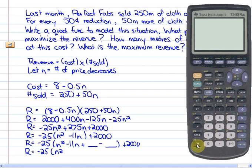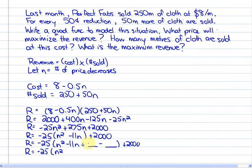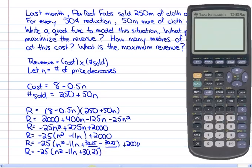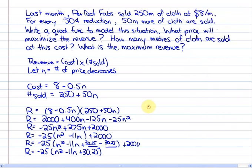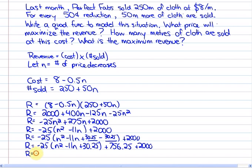So, revenue is equal to -25. Now, let me just complete that. This will be 30.25, 30.25. So, we are left with revenue equaling negative 25 times (n minus 5.5) squared plus 2,756.25.